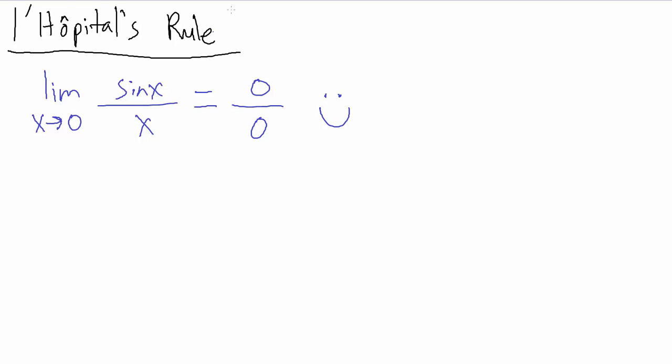So if we use L'Hopital's rule, then what we're going to get is limit as x goes to zero of sine of x over x. Now remember, L'Hopital's rule says this is equal to the limit as x goes to zero of the derivative of the top divided by the derivative of the bottom.